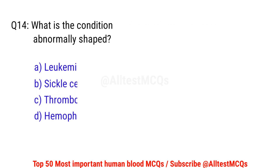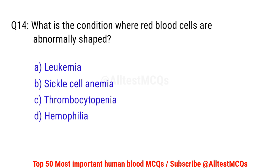Question number 14. What is the condition where red blood cells are abnormally shaped? Correct option is B. Sickle cell anemia.